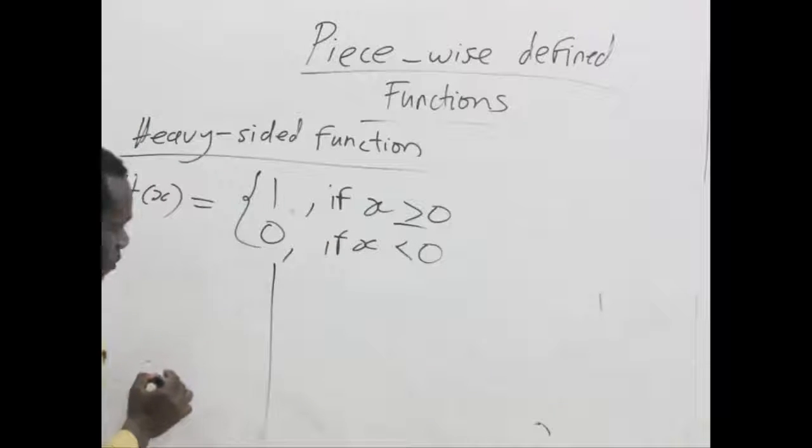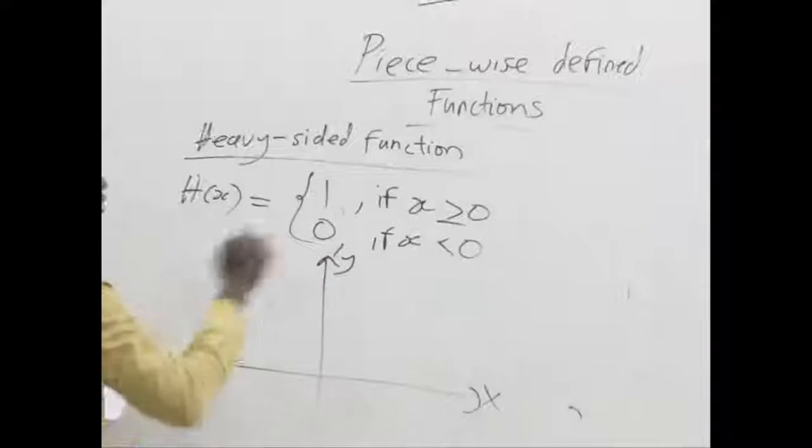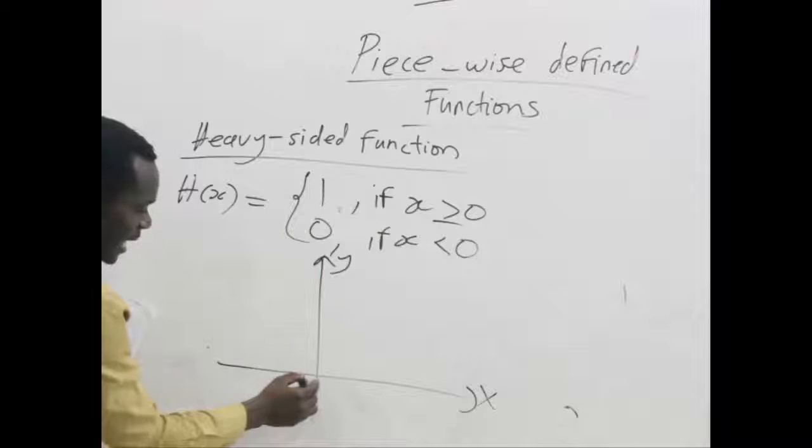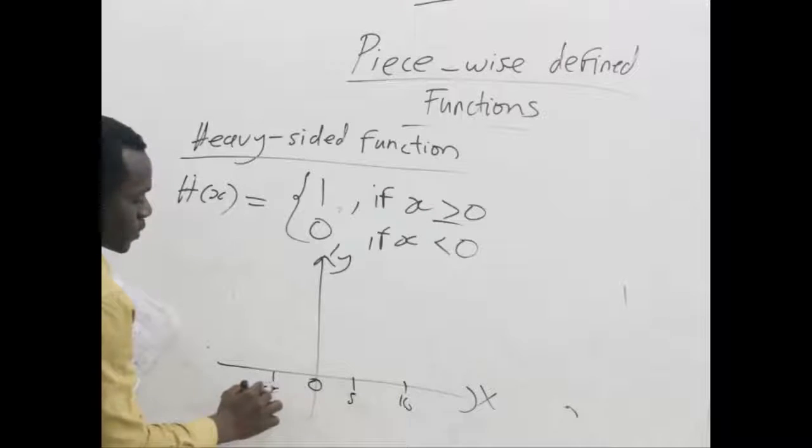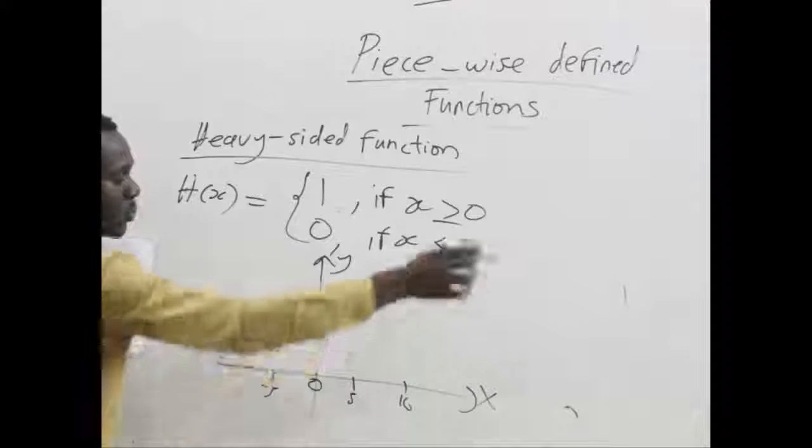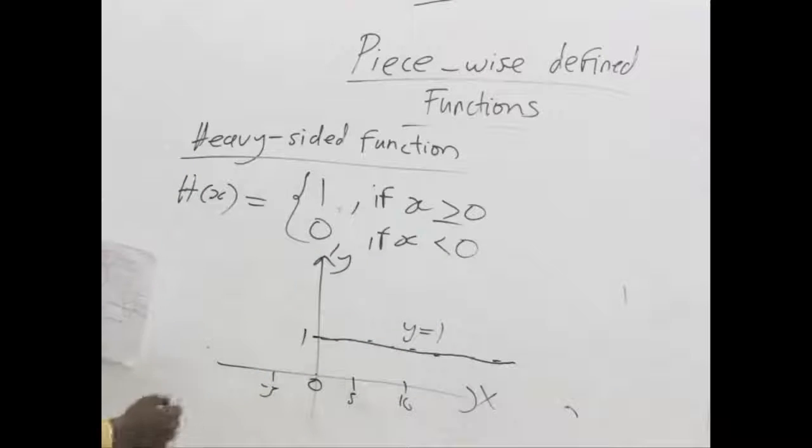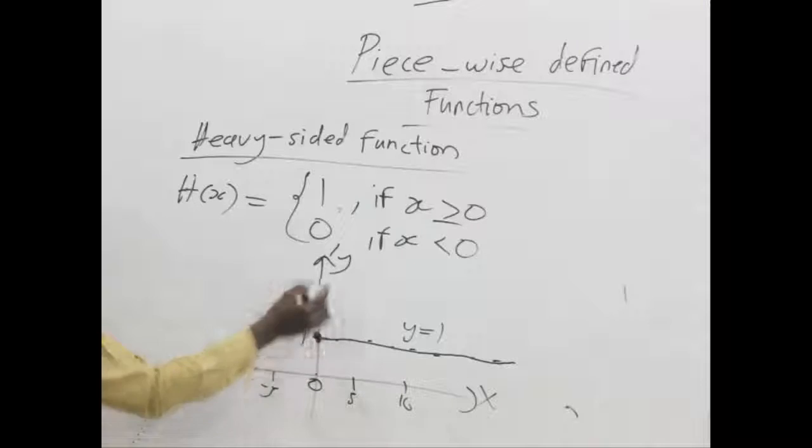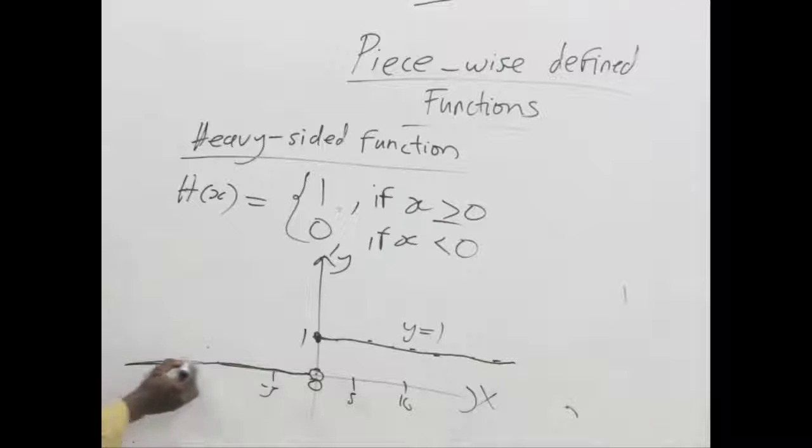So how do we plot this? On a Cartesian plane. These are constant functions, so they are horizontal lines. We have to select our 0. We said if x is greater or equal to 0, our function should be exactly 1. So from 0 to positive infinity, we are going to get a line which is horizontal. We name it y is equal to 1. And if it is less than 0, so here 0 is included. But here 0 is not included. So we place a circle there. All the rest are also 0. So this is what we call the heavy-sided function. It is also a piecewise defined function.